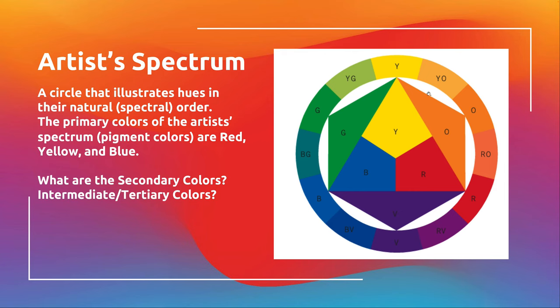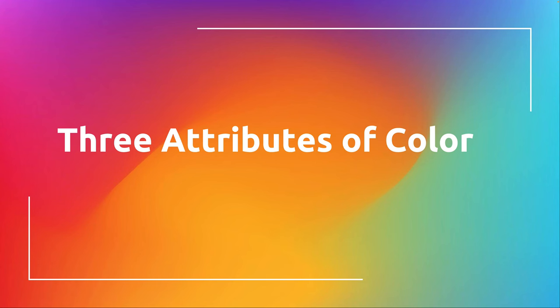Basically, this yellow-orange and blue-violet are technically going to be the complements. The red-violet and the yellow-green are technically going to be complements as well. No matter how simple or advanced your color wheel is, that complement relationship is always going to be directly across.